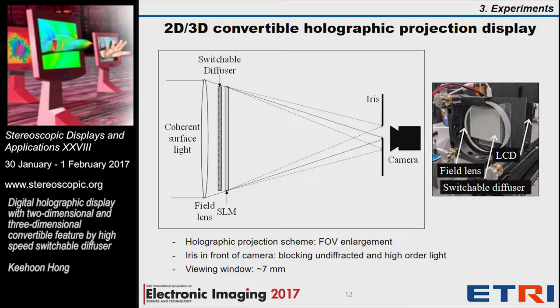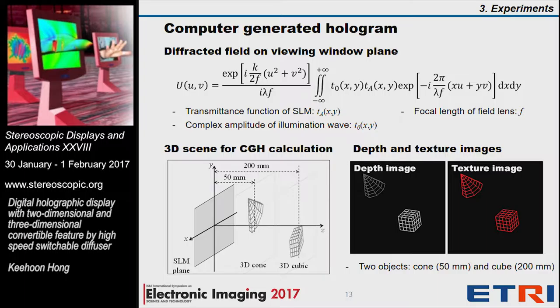In our configuration, the view window size is around 7 mm. We use a field lens in the system, so the lens function of the field lens should be considered during hologram generation. We used a computer generated hologram based on an equation where the lens function with focal length f is considered. The virtual 3D scene recorded in the CGH has two objects — a cone and a cube — located 50 mm and 200 mm apart from the SLM plane, with depth and texture information of the 3D scene.